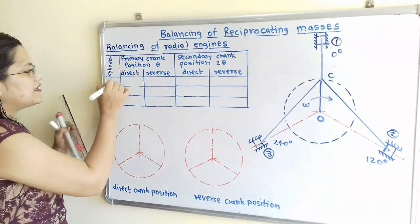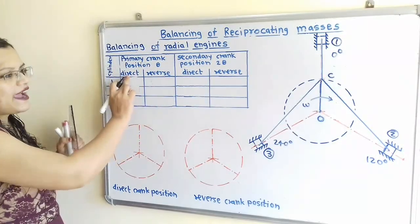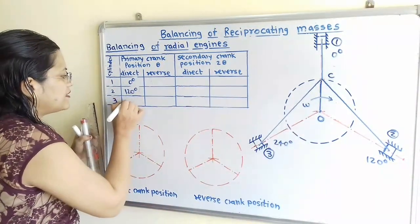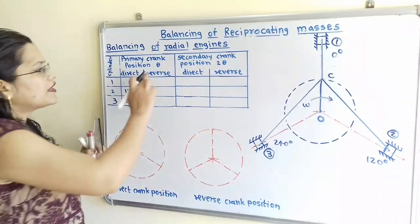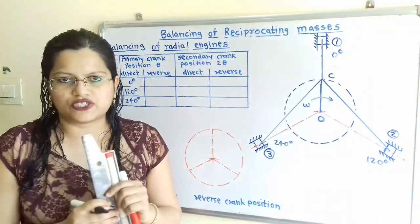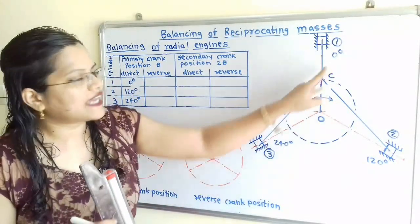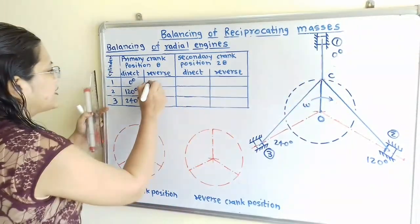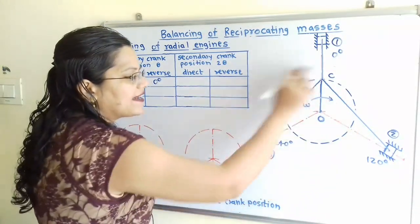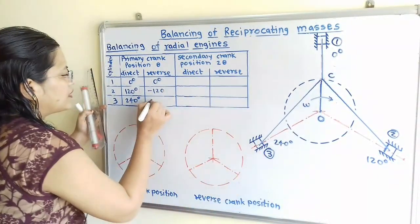We will now fill in the table. The first column is for the cylinder number (1, 2, 3). For the primary crank position theta under the direct crank: cylinder 1 is at 0°, cylinder 2 at 120°, and cylinder 3 at 240°. For the reverse crank, we consider the anticlockwise direction, so all angles are taken negatively: cylinder 1 is 0°, cylinder 2 is −120°, and cylinder 3 is −240°.